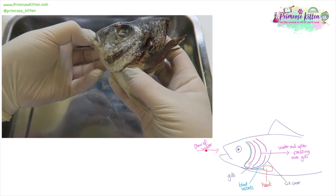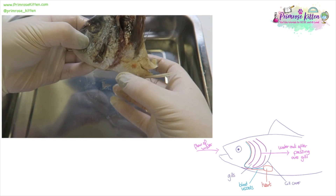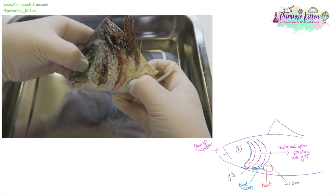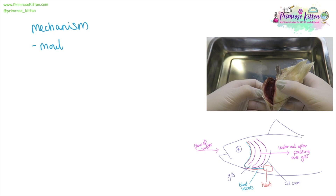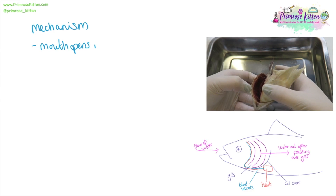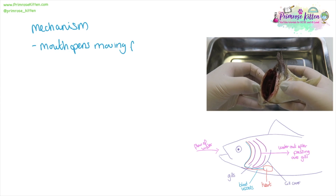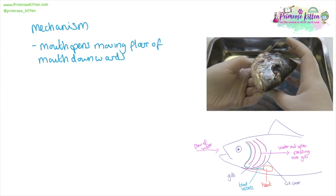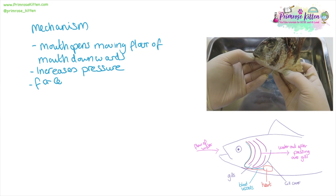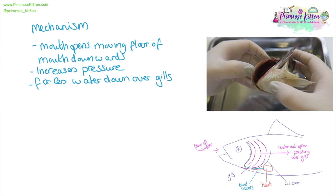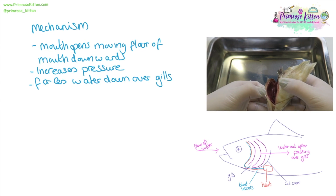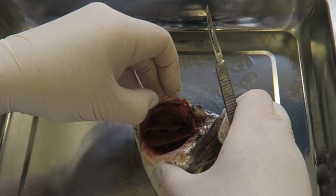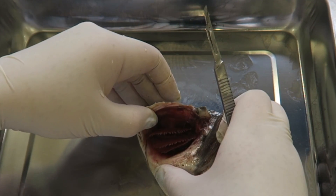Water will flow in through the mouth and it will flow out passing over the gills, out here behind the gill cover. The way that the fish moves the mouth and the gills together creates a mechanism for the water to flow over the gills. As the mouth opens, the floor of the mouth moves downwards, which increases the pressure and forces the water to move out over the gills. If we want to look at the gills and the gill filaments in more detail, then we have to dissect the fish head.